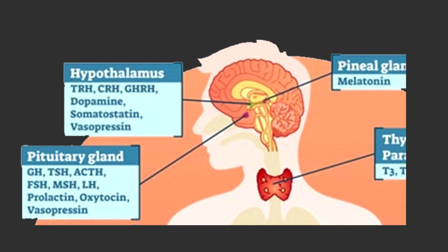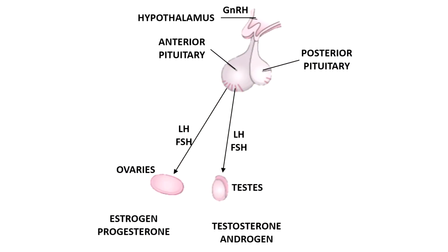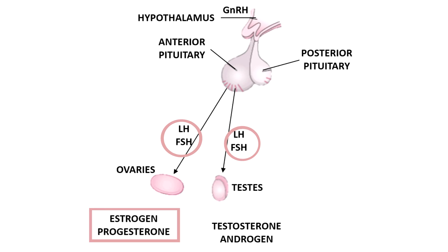The pituitary gland controls the functions of both the testes and the ovaries. The reproductive system is controlled by the gonadotrophins — the follicle-stimulating hormones (FSH) and the luteinizing hormones (LH). These two hormones are produced by the pituitary gland. When the gonads — the ovaries and testicles — receive LH and FSH, they in turn produce hormones. The ovaries will secrete estrogen and progesterone, while the testes will produce testosterone and androgen. We call these the sex hormones.